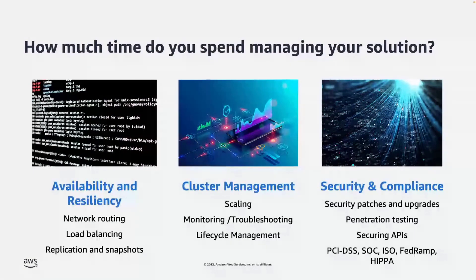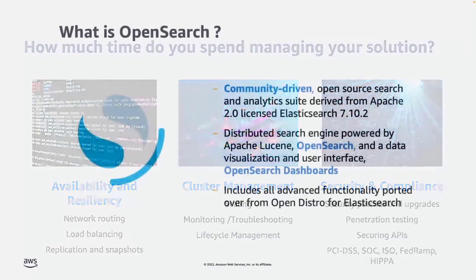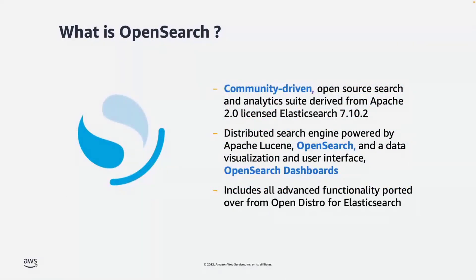That is where we are going to talk about OpenSearch. OpenSearch is basically a community-driven open source project derived from Apache 2.0 licensed Elasticsearch 7.10.2. There is a vibrant community out there developing many more features into OpenSearch. It is open source and anybody can see the OpenSearch product roadmap on GitHub and also contribute to the product roadmap as well.